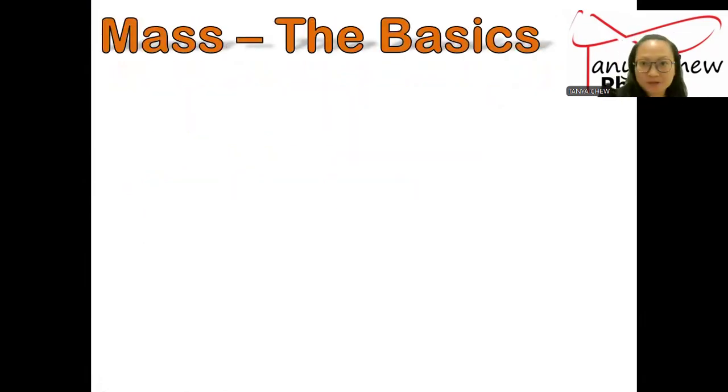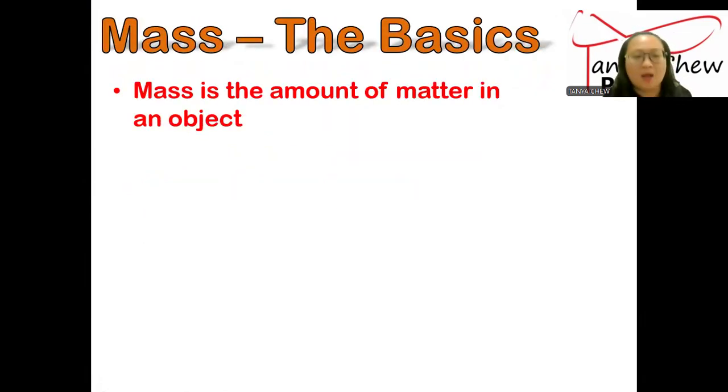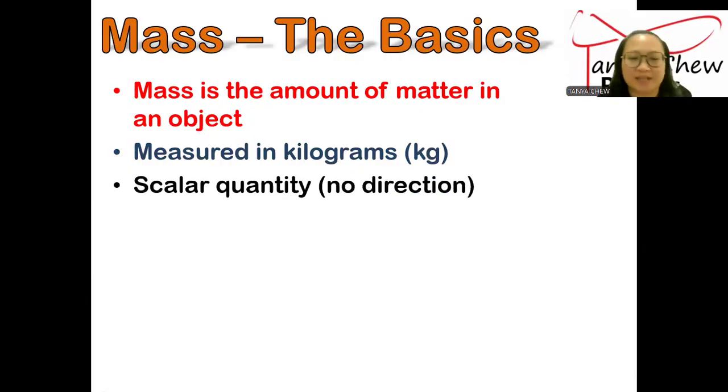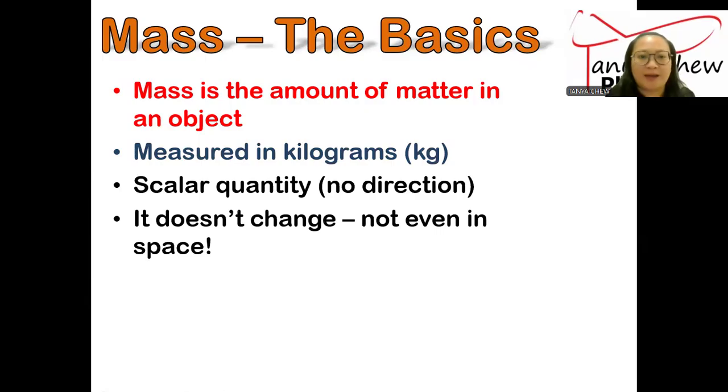Now let us start with mass first, the basics. Mass is defined as the amount of matter, the amount of atoms, the amount of particles contained in an object. Mass is measured in kilograms or grams. Mass is a scalar quantity, meaning it has only magnitude without direction, and it doesn't change, not even in space.